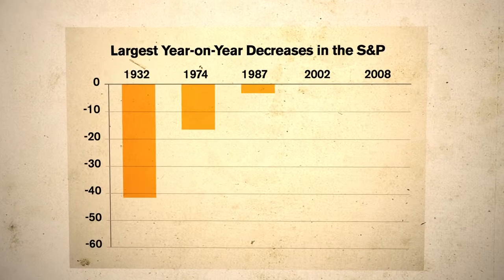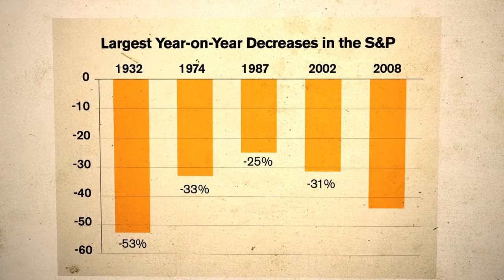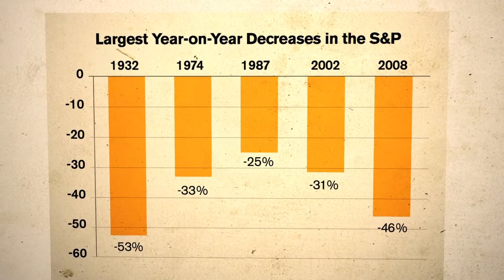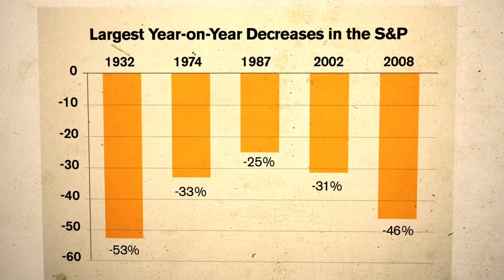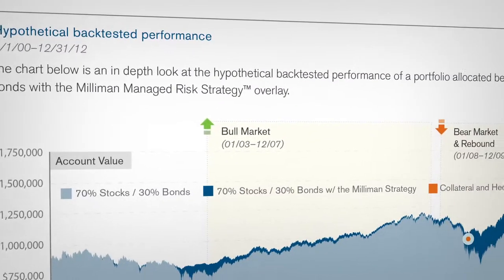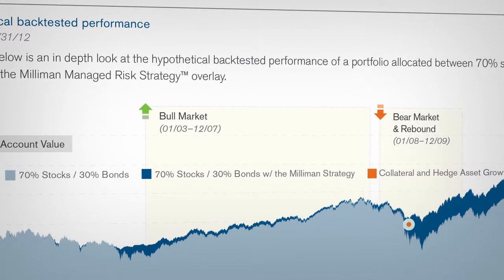The strategy doesn't promise there won't be any losses. The strategy is designed so that you won't have the catastrophic losses. The four or five worst years that you might expect over the future of the pension fund are the ones that get cut off — eliminating the negative tail.